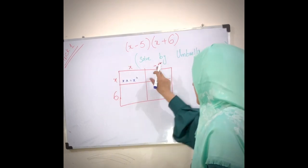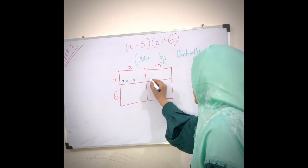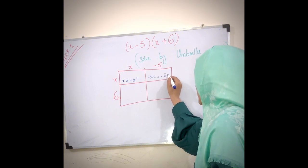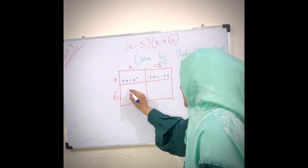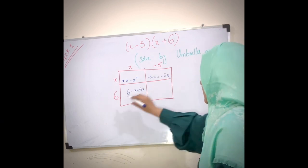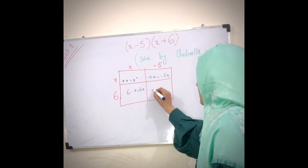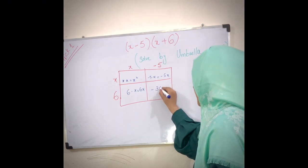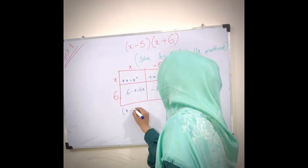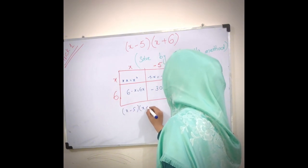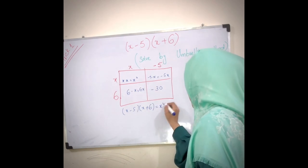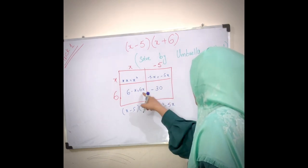Here, this x minus 5 is equal to minus 5x, and this 6 multiplied by x is equal to 6x. 6 and 5 become 30. The answer is equal to x squared minus 5x plus 6x minus 30.